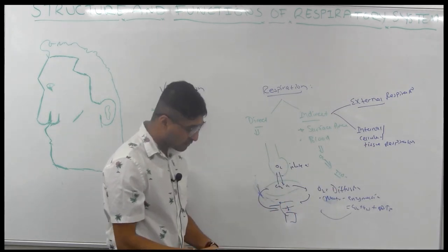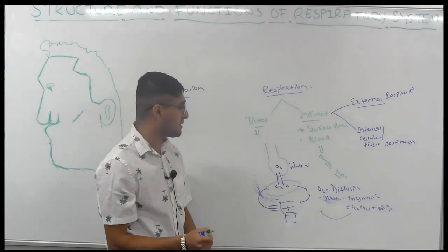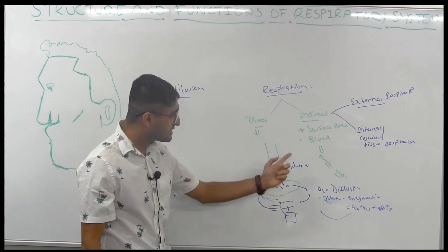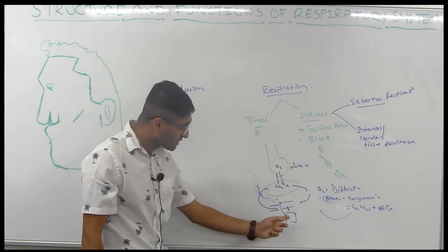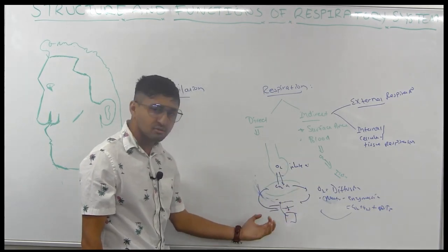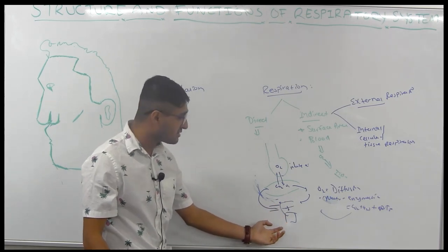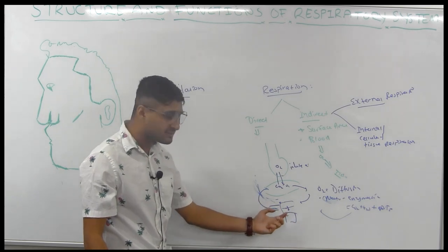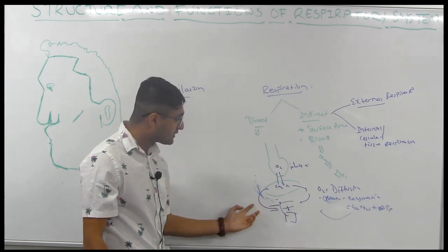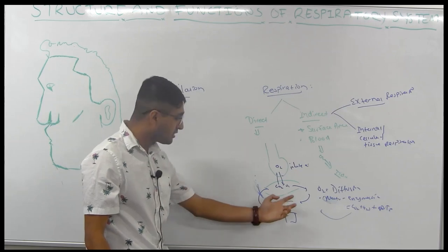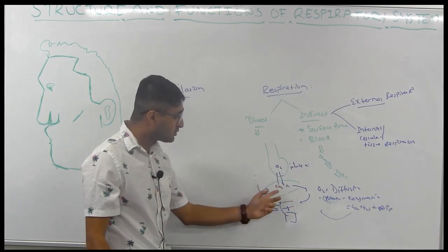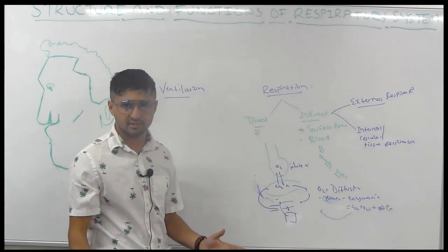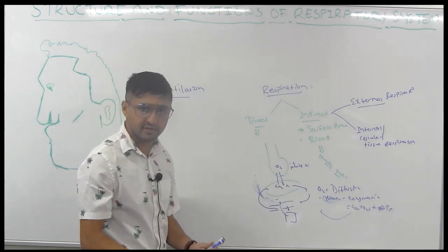To summarize: respiration involves exchange of gases at the respiratory surfaces, carried by blood, and cellular use of oxygen to make ATP. The breakdown products — carbon dioxide — dissolve in blood, return to the pulmonary system, and are exhaled out. This whole process is called respiration.